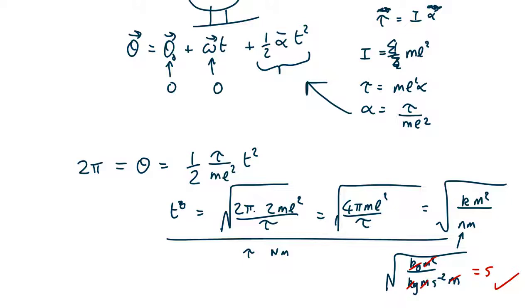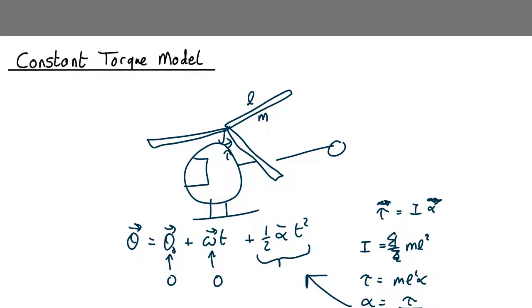That's one type of question. Another one might be, instead of asking how long will it take to reach a given angle, we could ask how long would it take to reach a given angular speed, let's say 10 radians per second.